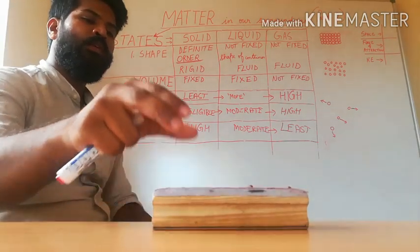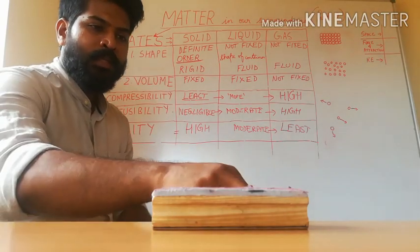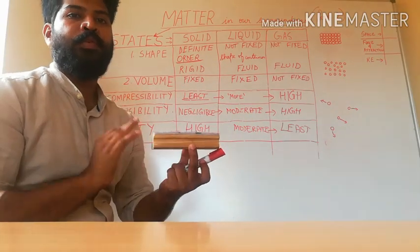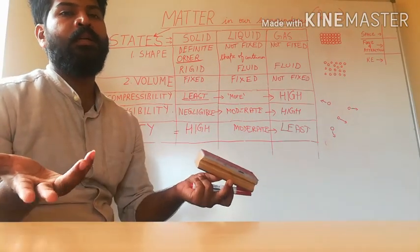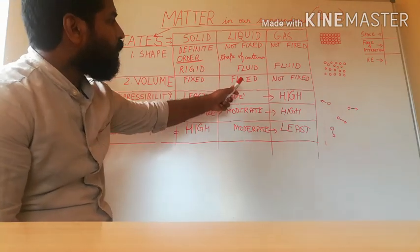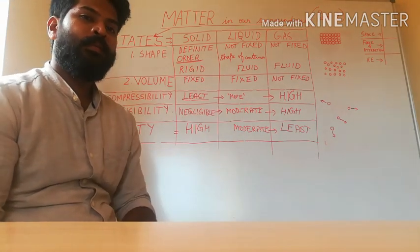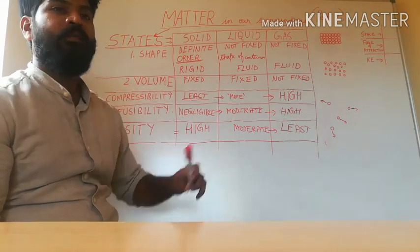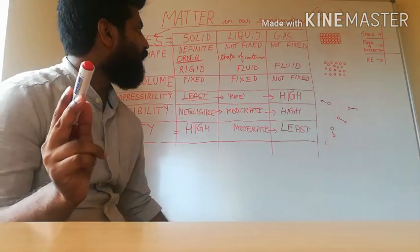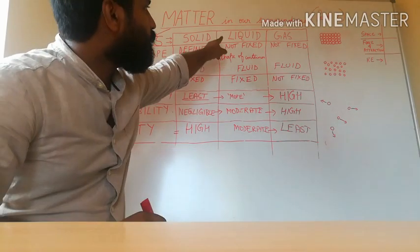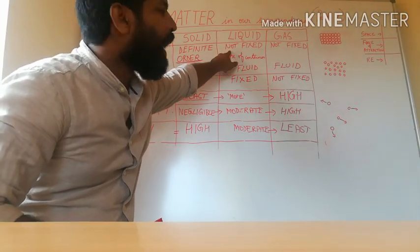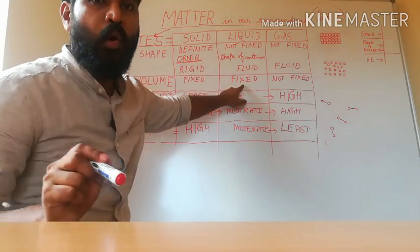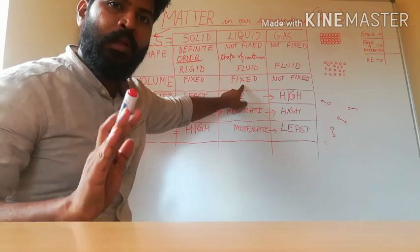Let's talk about volume. The volume of a solid is fixed because the boundaries are fixed — it will not change. In the case of a liquid, volume is also fixed. A key point to remember: liquids don't have a fixed shape, but they have a fixed volume.